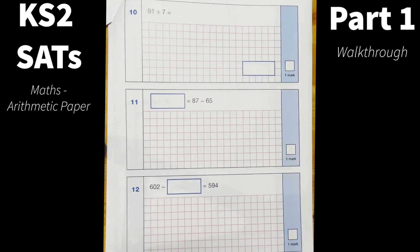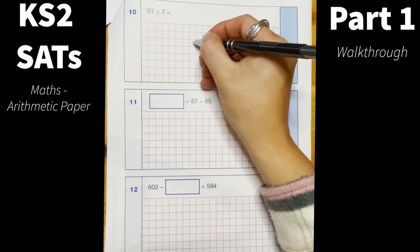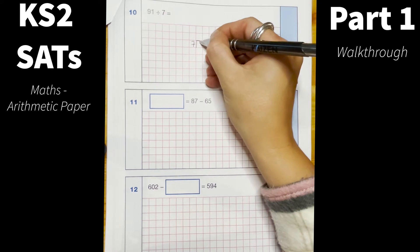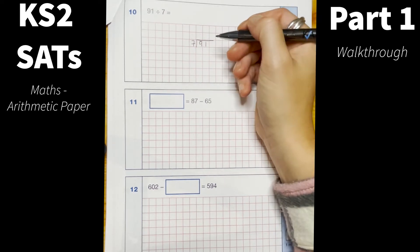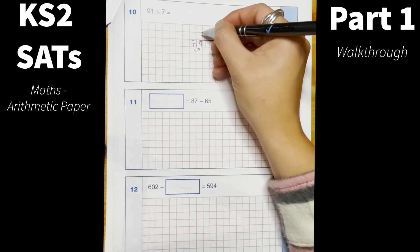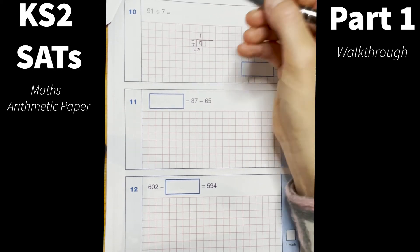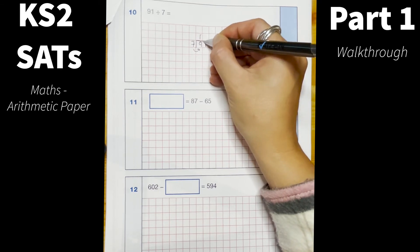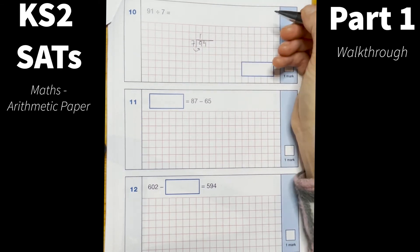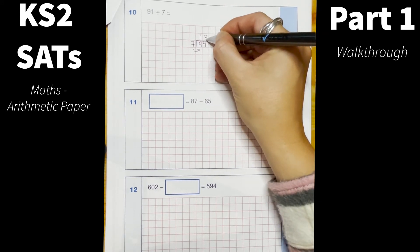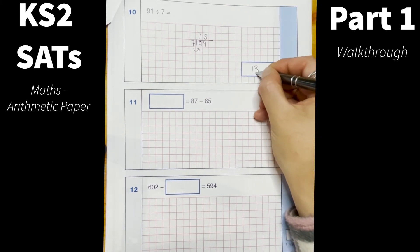Okay number 10, 91 divided by 7. So for this one I'm going to use the bus stop method. So I will then see how many times 7 goes into 9, I know that goes in once and my remainder is going to be 2, so my remainder becomes the tens of the next column. 7 goes into 21 three times, my answer is 13.